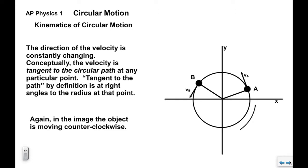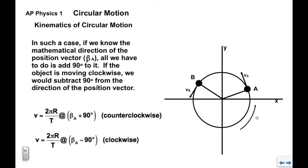The direction of the velocity is constantly changing. The instantaneous velocity at any point in the path is tangent to the circular path. Tangent to the path, by definition, is at right angles to the radius at that point — and the radius is our position vector. So in counterclockwise motion, all we need to do is add 90 degrees to the direction of the position vector to get the direction of the velocity.